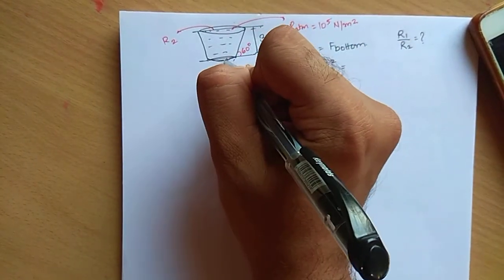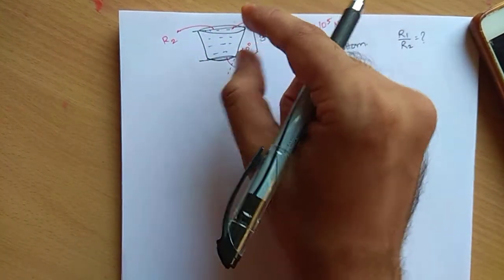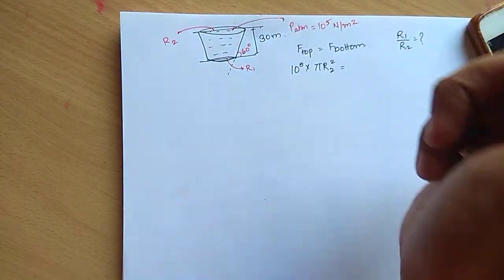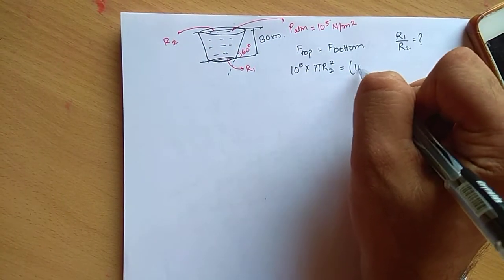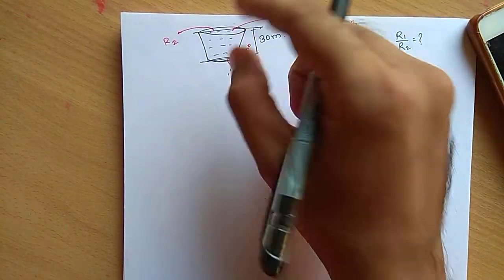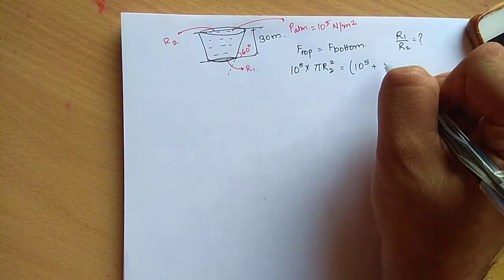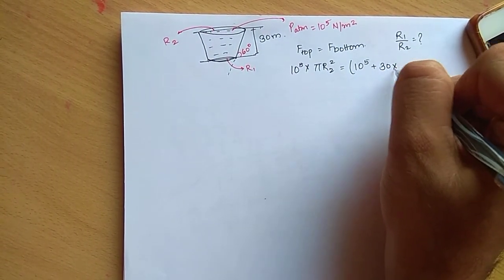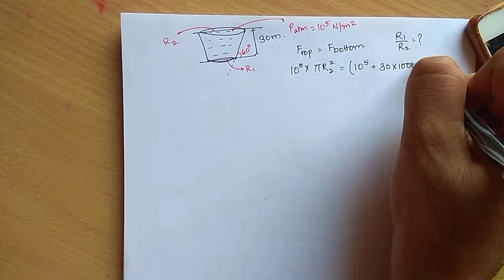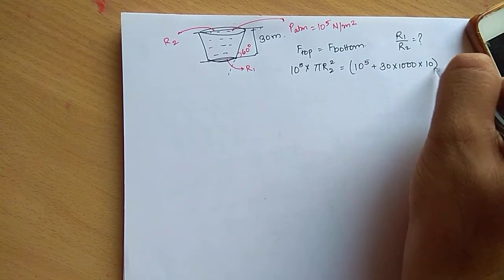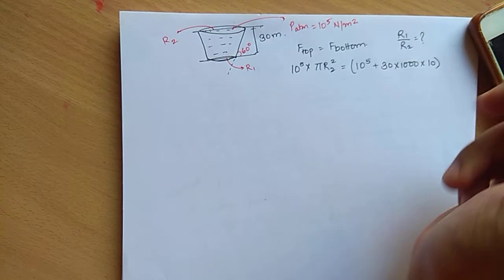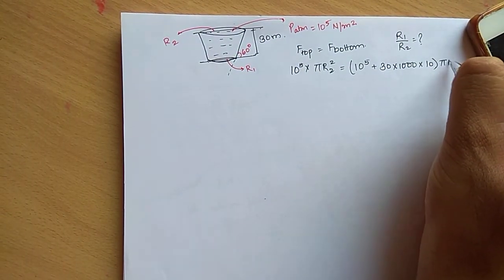Now pressure at the bottom would be equal to atmospheric pressure plus rho g h. So 10 raised to 5 plus h rho g. Height is 30, density is 1000, and gravity is 10, into the area of the bottom face that is pi r1 square.